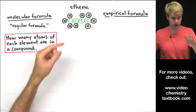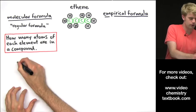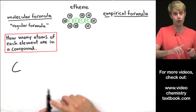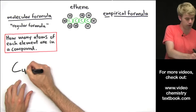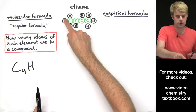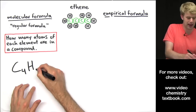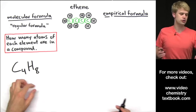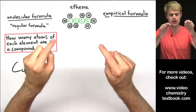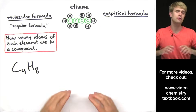So ethene here has two elements: carbon and hydrogen. For carbon, it has 1, 2, 3, 4 atoms, so we do C4. And then for hydrogen, we've got 1, 2, 3, 4, 5, 6, 7, 8 — 8 hydrogens. So C4H8 tells us how many atoms and of what type are in this compound.